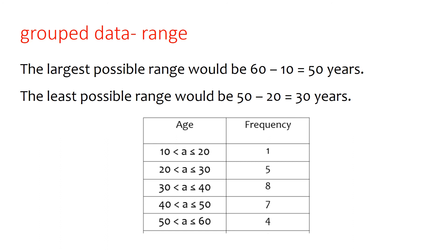But also if the youngest person was at the top of that 10 to 20 age bracket and were 20 and the oldest person was at the bottom of the 50 to 60 age bracket and was 50, the least possible range could then be 50 take away 20, which is 30.